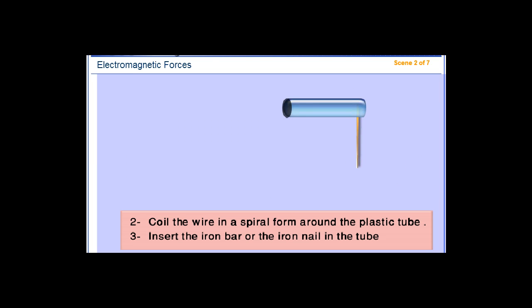Coil the wire in a spiral form around the plastic tube. Insert the iron bar or the iron nail in the tube.